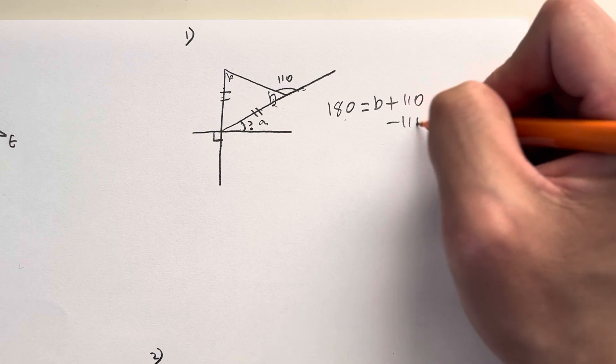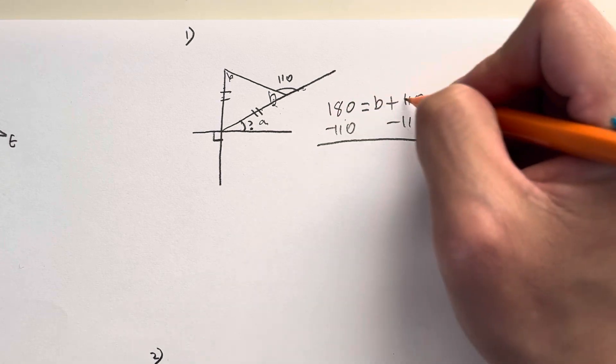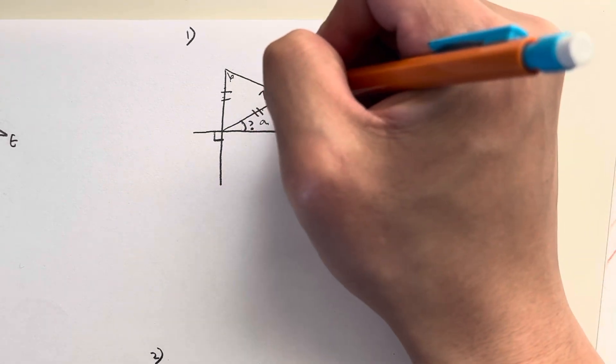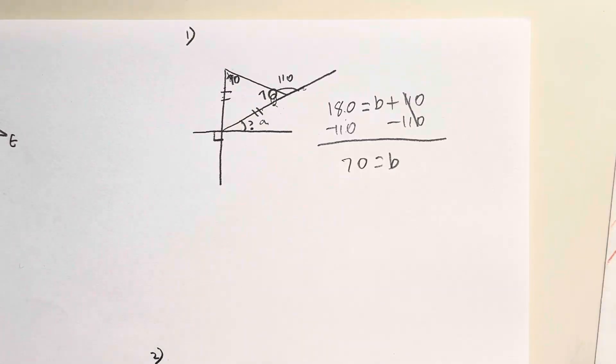And to get B I could just minus 110 on both sides and 110 to cancel out, meaning B is equal to 180 minus 110 which is 70. So this value right here is 70 so therefore this value is 70 as well.